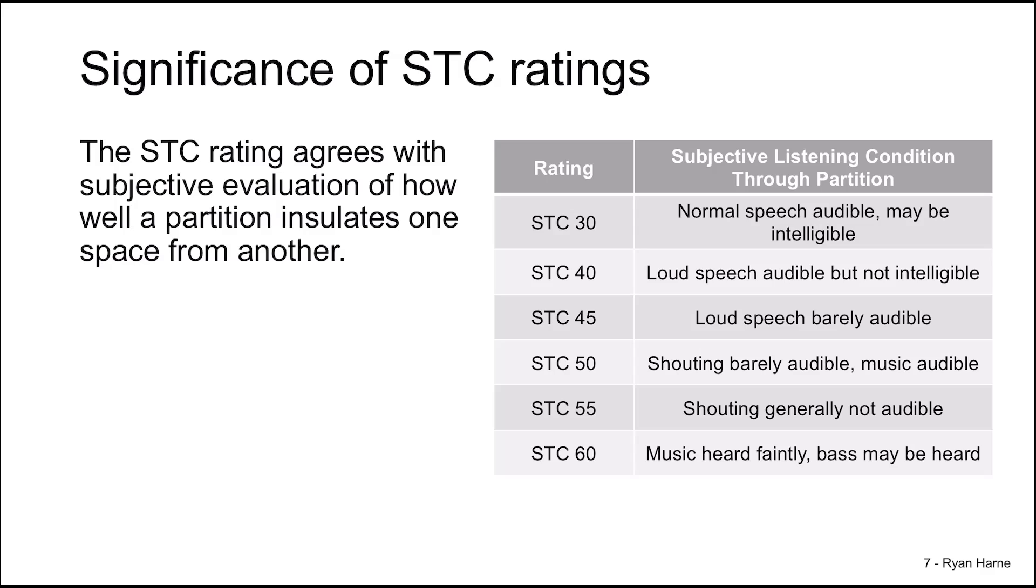While STC 60 indicates that music can be faintly heard while bass notes might actually carry due to the very long wavelengths involved. An STC 60 is an important cutoff. A transmission loss of 60 decibels indicates that the partition prevents almost all of the sound power from passing. In fact, only one one-millionth of the sound power gets through when the transmission loss is 60.